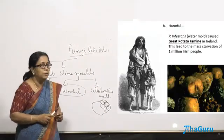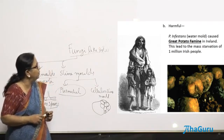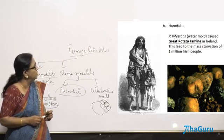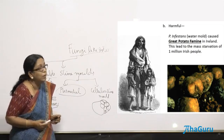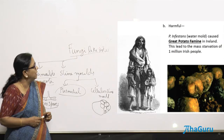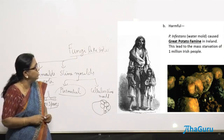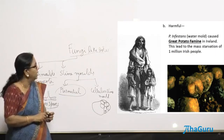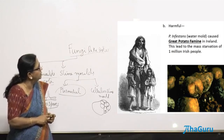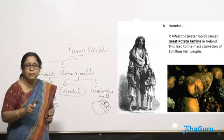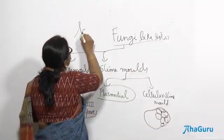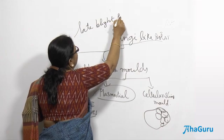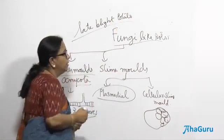But there is one more water mold called Phytophthora infestans. This is the water mold that caused the great potato famine in Ireland, where it led to mass starvation and killed almost 1 million people — Irish people starved because of lack of food, as their main food was potato. The disease caused by Phytophthora infestans is called late blight of potato. This is one example of a water mold which is a fungi-like protist.